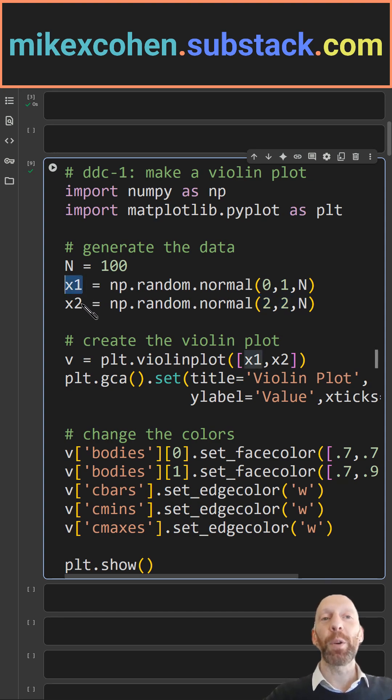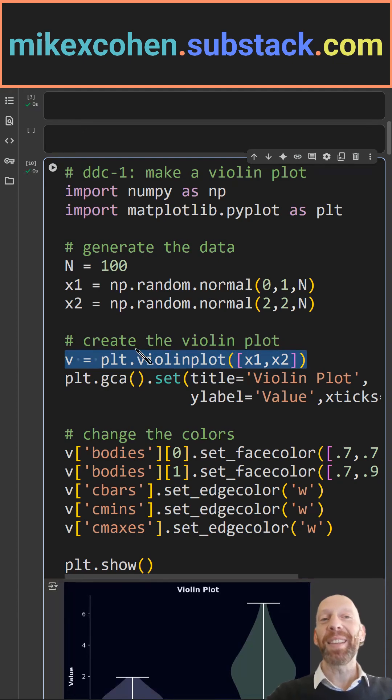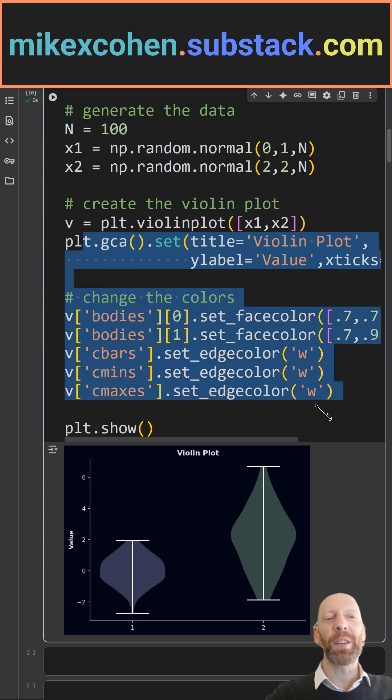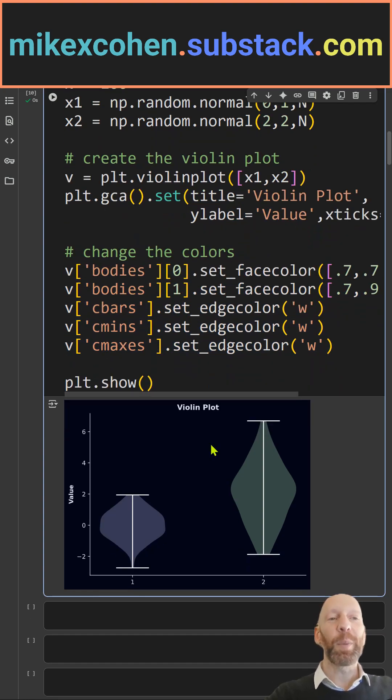Then we take both of those NumPy arrays and stick them into a list, and then we simply call plt.violinplot. That is technically the end of this daily data challenge, but I have some additional lines of code here just to make the plot look a little bit nicer.